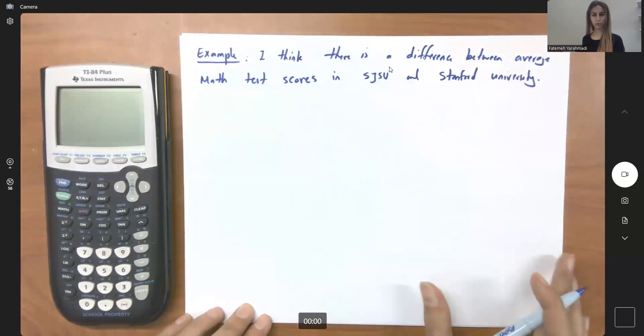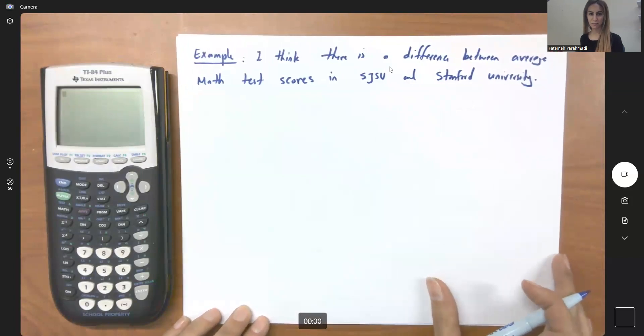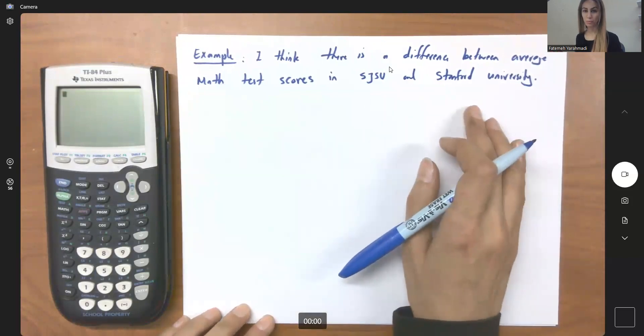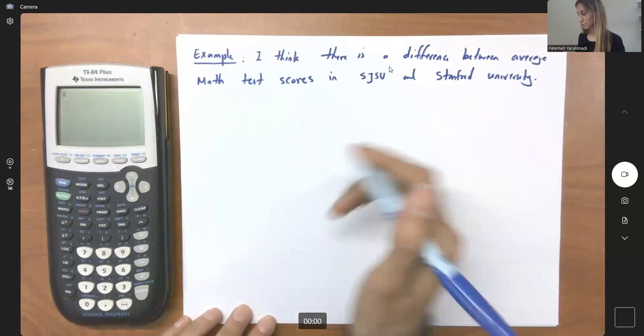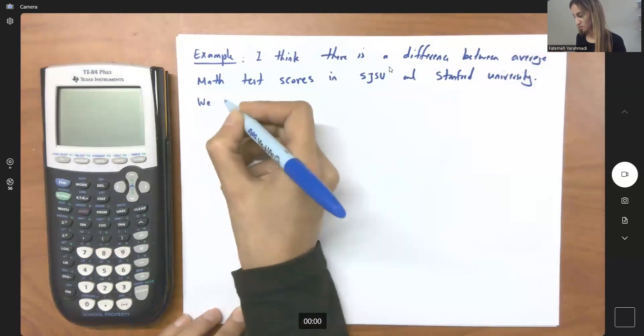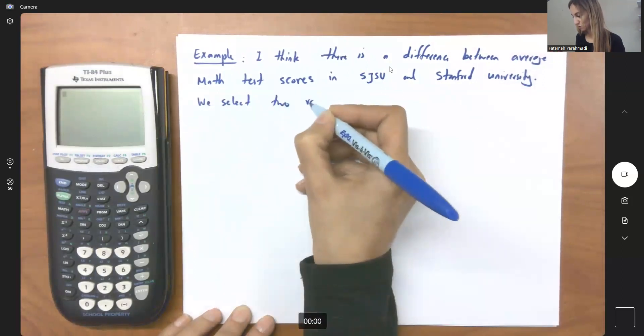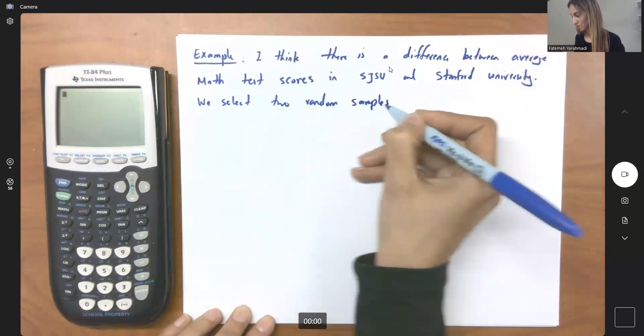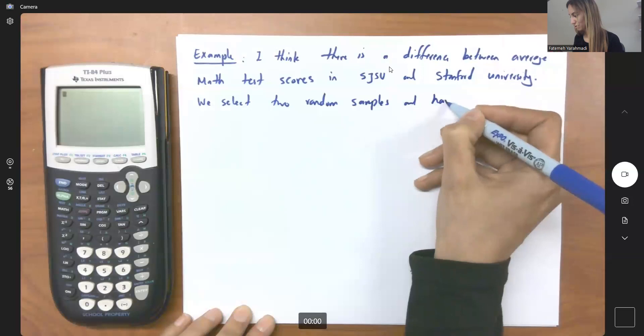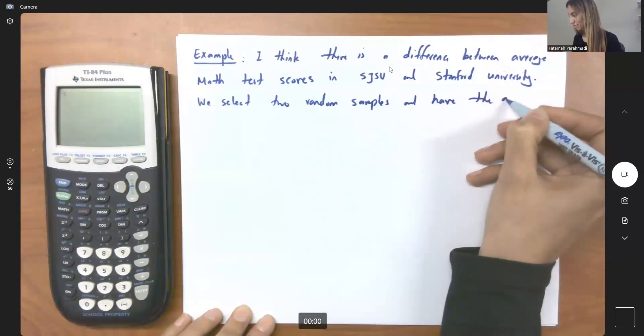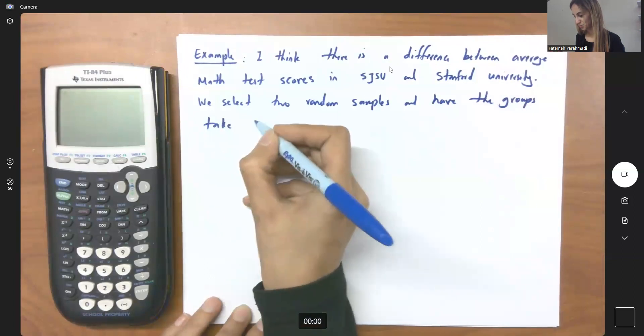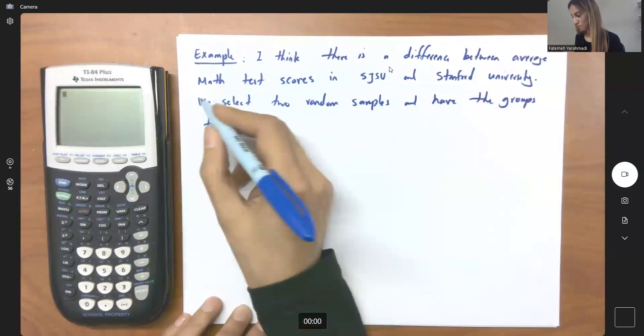So what I'm going to do, I'm going to design an exam and have that exam be taken in these two population random samples. We select two random samples and have the groups take the math test.